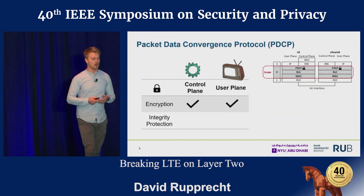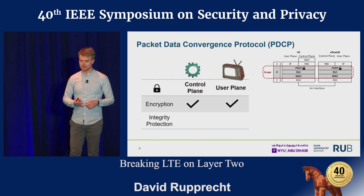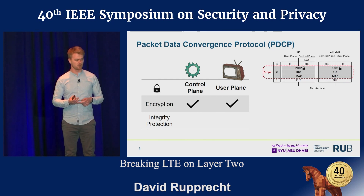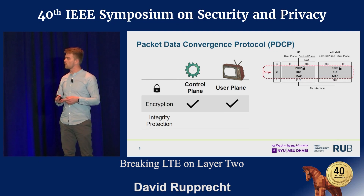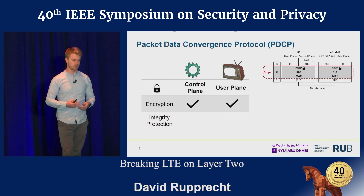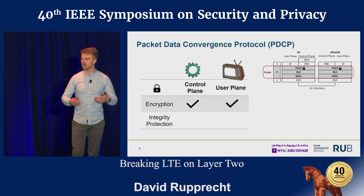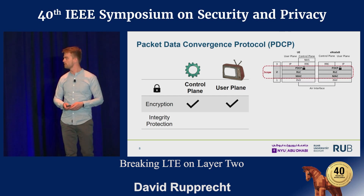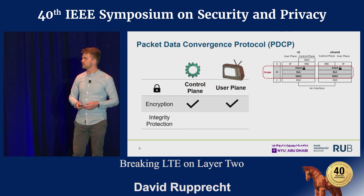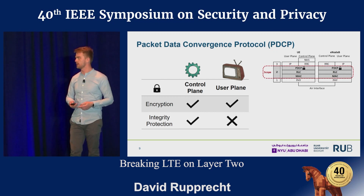We need to separate our data into two kinds of planes. We have a control plane — this is LTE-specific traffic, like when we hand over from one cell to another. And we have user plane traffic, which is basically raw IP data when we want to access a website or do some TV streaming. On both planes we have encryption, but integrity protection exists only on the control plane and not on the user plane.